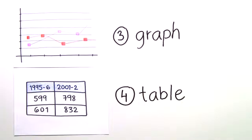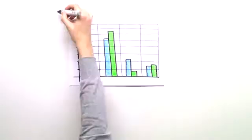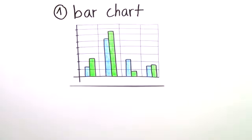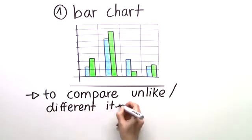We'll go through each one in detail so you'll get to know all the vocabulary you need. We'll start with the bar chart. This visual aid is used to compare unlike or different items.